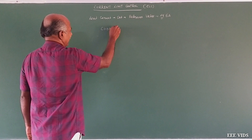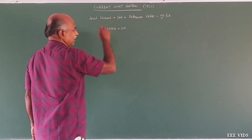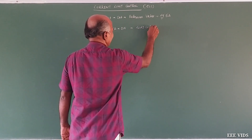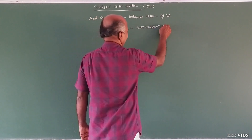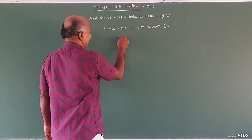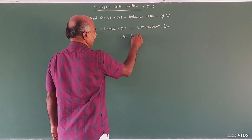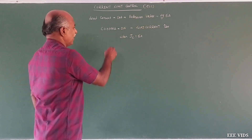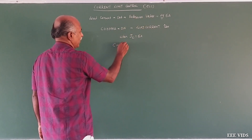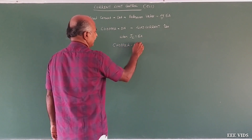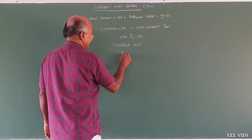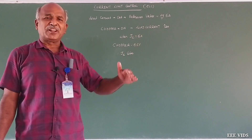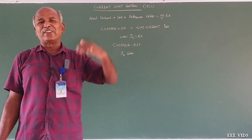When the chopper is on, the load current increases. When it reaches the reference value, the chopper turns off. With the chopper off, IL decreases. It keeps decreasing — that is the lower limit challenge. IL automatically decreases until a particular point.